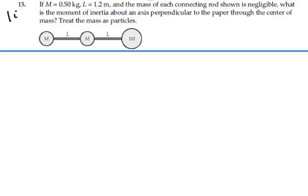Here's problem 1015. If m is equal to 0.5 kilograms, l is equal to 1.2 meters, and the mass of each connecting rod is negligible, what is the moment of inertia about an axis perpendicular to the paper through the center of mass? Treat the masses as particles.